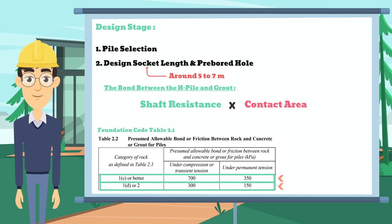Since in-socketed H-Pile needs to be formed into category 1C rock, we will use 700 kPa for compression and 350 kPa for tension.